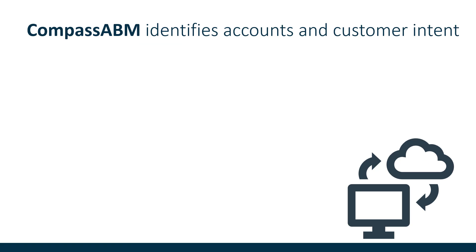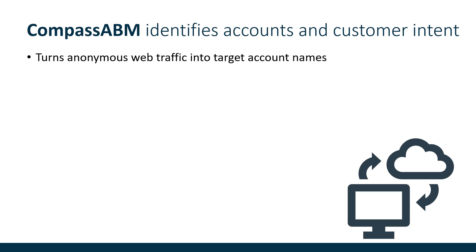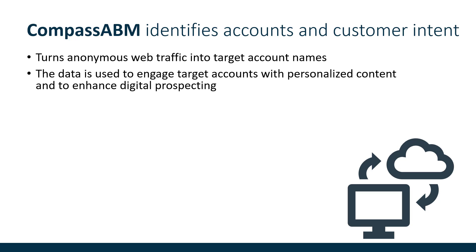Now a quick reminder on how Compass ABM works, both for your ABM target accounts and for prospect accounts. We turn anonymous web traffic into target account names. When people travel around the internet on a certain IP, we have technology that looks at that IP and turns it into a company name and company details. We typically identify around 50% of traffic — much better than having no information. We then use that data to engage target accounts with personalized content, providing customized banners, getting them to the right pages, and helping you understand who else is on your site to enhance digital prospecting.